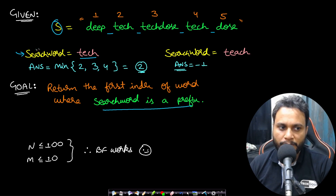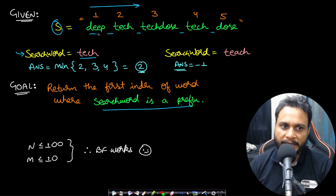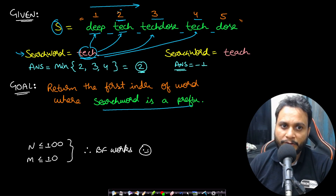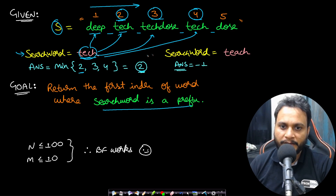So if you just go from left to right, you check word by word: is 'tech' a prefix of 'deep'? No. Is 'tech' a prefix of 'tech'? Yes. Now 'tech' is a prefix of this 'tech' at index 2, at index 3, and at index 4 as well — because 'tech' is a prefix in 'techdose,' and 'tech' is a prefix in 'tech' as well. So there are three options: 2, 3, and 4. The minimum is 2, and therefore the answer will be 2.